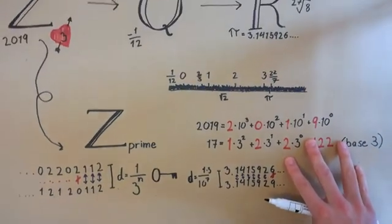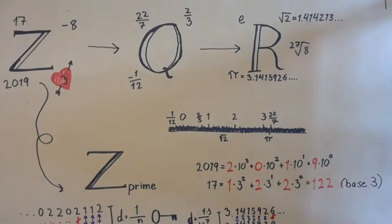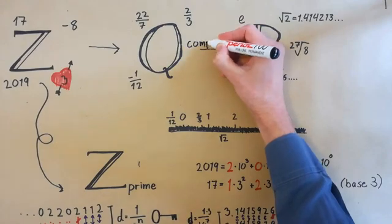Now, remember how I said the real numbers fill in all the gaps left in the number line? Now that we have a new way of measuring distance, the gaps show up in different places, and we get something different when we try to fill them all in. What we get are the 3-adic numbers, since we chose to go with 3 as our prime.